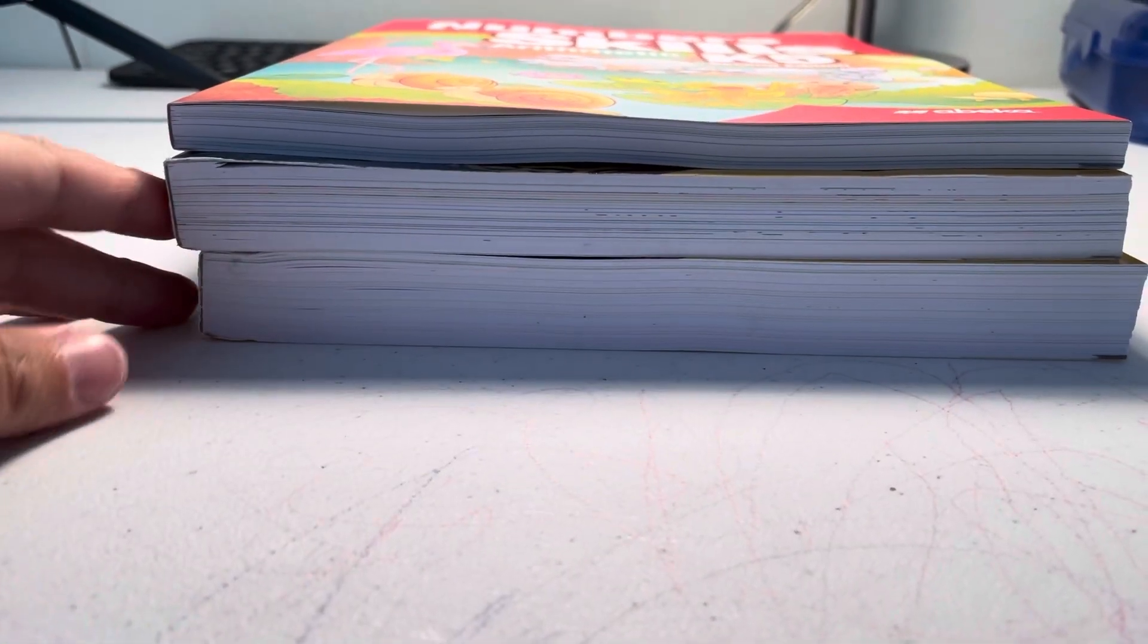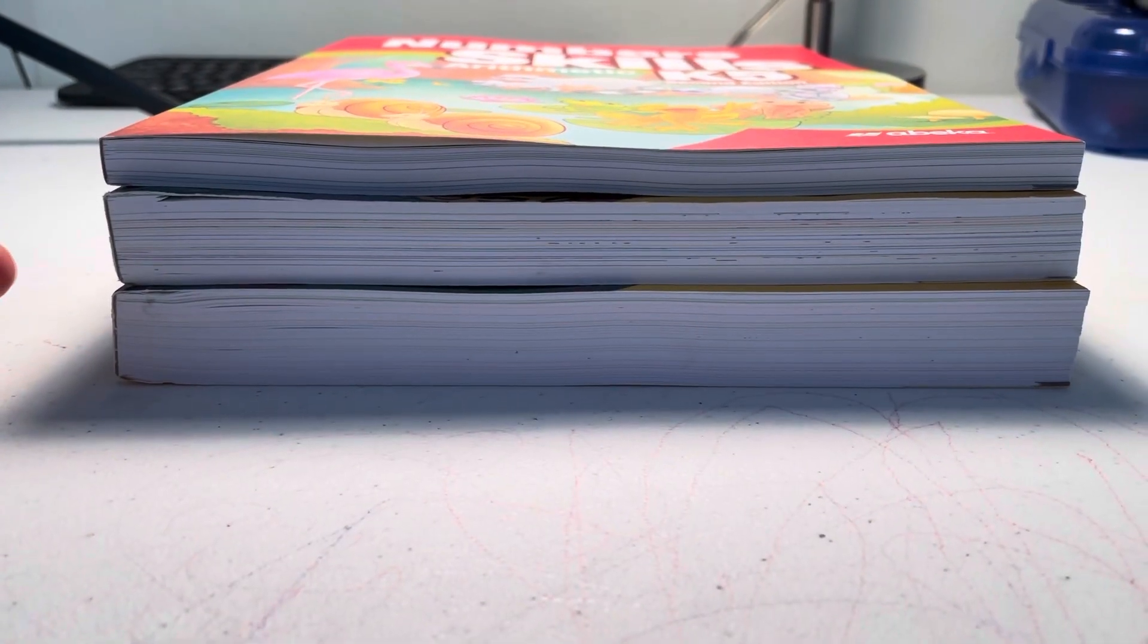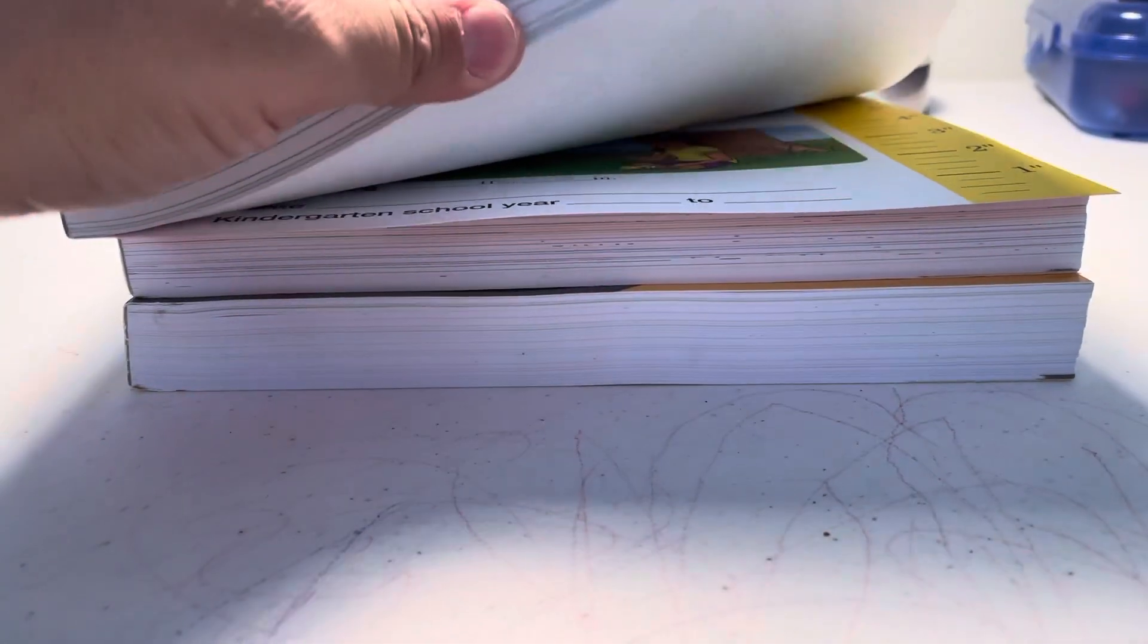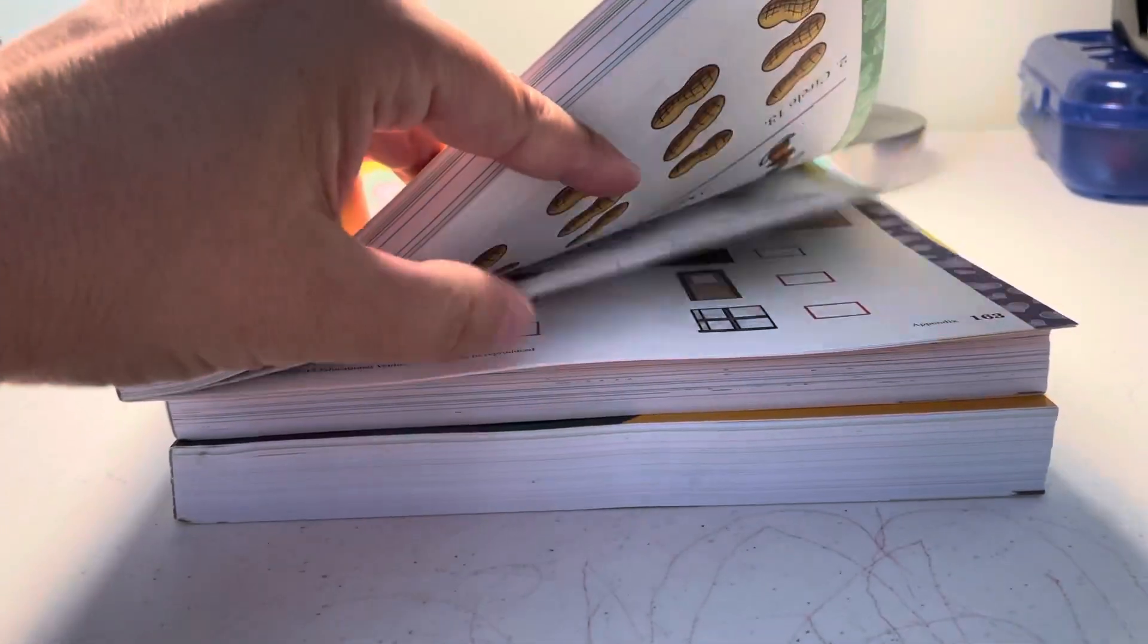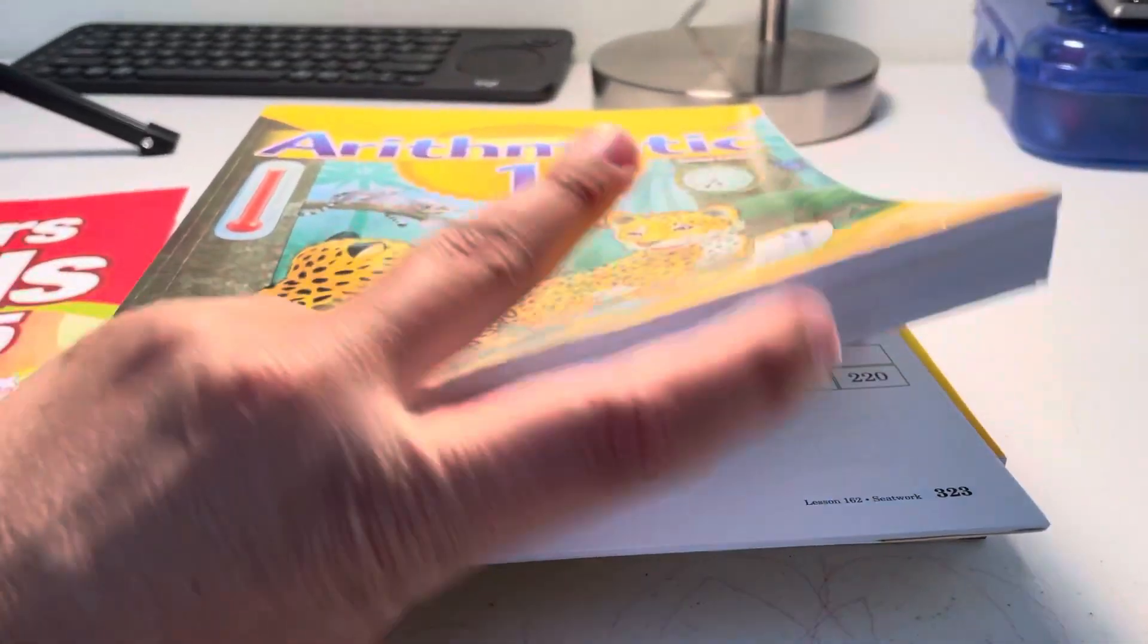So you can kind of see how thick it is. Not too bad for kindergarten. It's about 163 pages. And then it ends here.